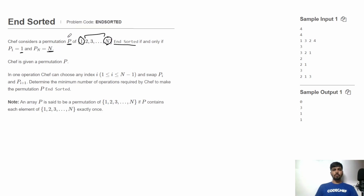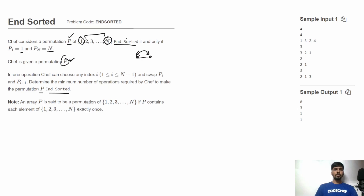Chef is given a permutation P, and in one operation chef can choose any index i and swap P[i] with P[i+1] — in short, chef can choose any two adjacent numbers and swap them. We need to determine the minimum number of operations required by chef to make the permutation P N-sorted.